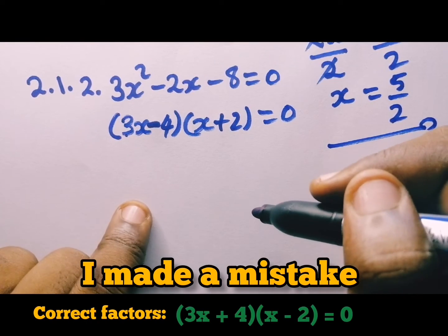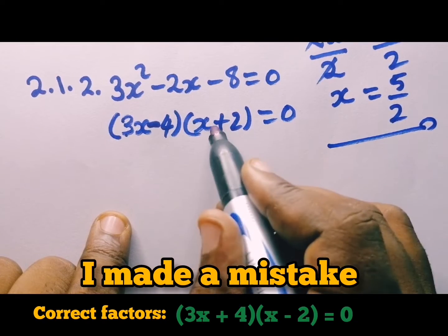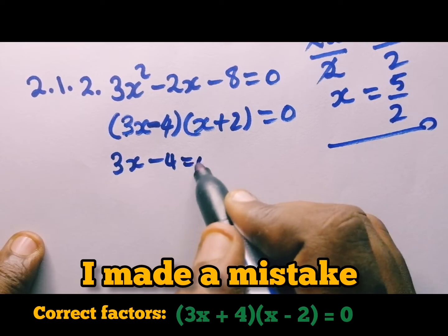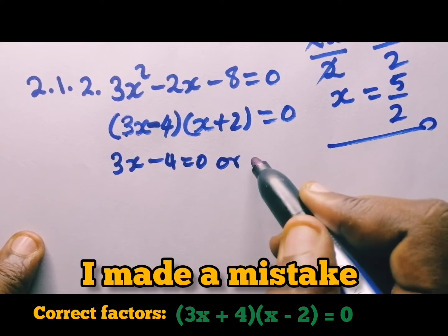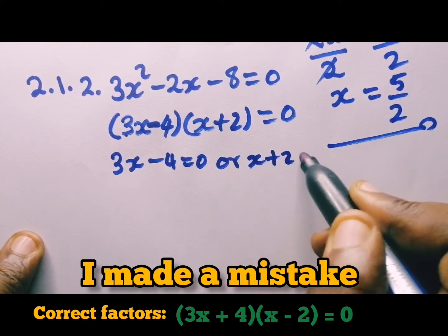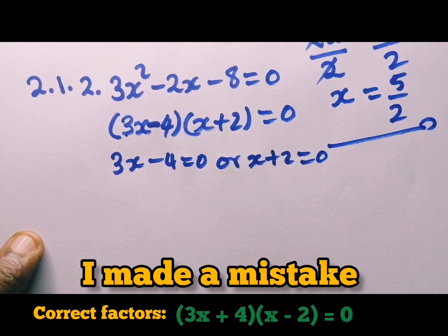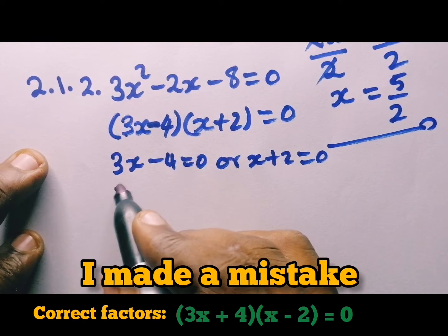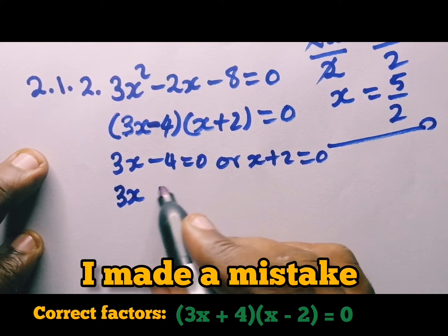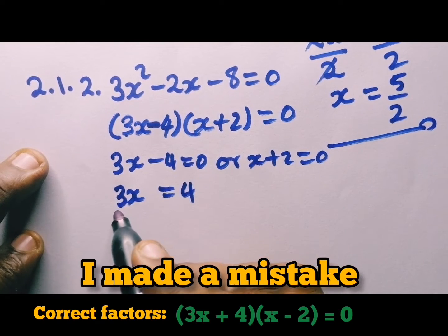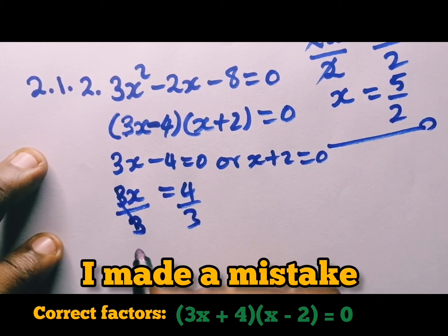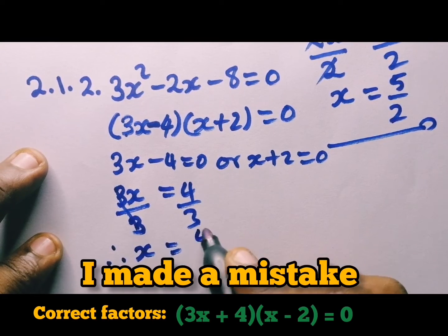Then what to do from here, you equate this to 0, you equate this to 0. Say 3x minus 4 equal to 0 or x plus 2 equal to 0. I'm doing this for the lesson purposes. Otherwise, you can just jump this step. There, solving for x, you take this to the other side. We'll have 4 divided by 3. This 3 will cancel, so we are left with x is equal to 4 over 3. This is the first one.